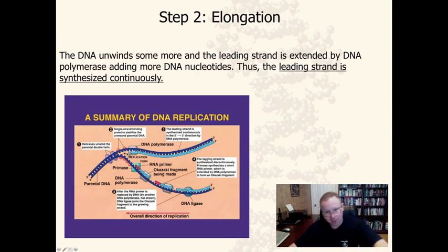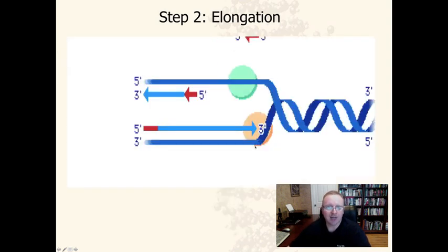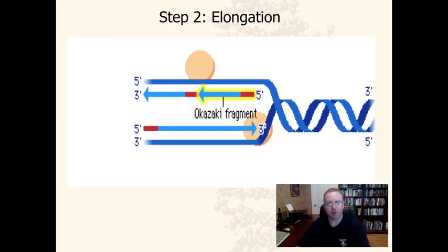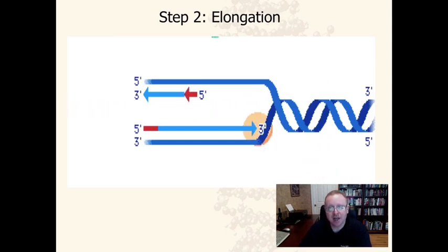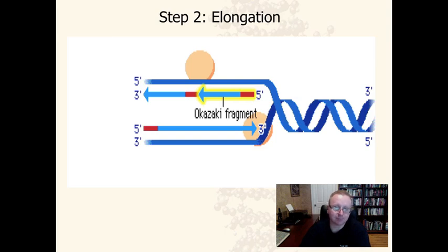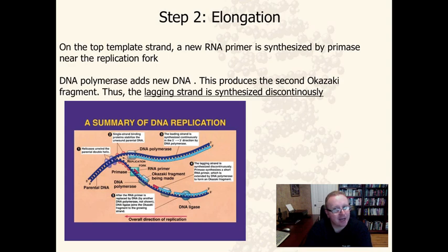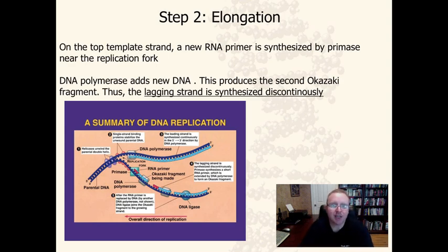On the lagging strand, it's a different situation. As the replication fork opens further, a new primer needs to be added because DNA polymerase cannot begin its own chain, and it must read the 3' end of the template, adding new DNA 5' to 3'. A new RNA primer is synthesized near the replication fork by primase, then DNA polymerase adds new DNA moving away from the replication fork, producing a second Okazaki fragment. Because there are breaks between fragments, the lagging strand is said to be synthesized discontinuously.